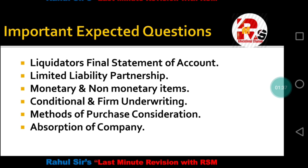The first expected short note is the Liquidator's Final Statement of Account, which comes from the liquidation chapter. The second is Limited Liability Partnership (LLP). Next is foreign exchange accounting for translation of foreign currency, where short notes can also be made. After that is conditional and firm underwriting, related to the chapter on underwriting of shares and debentures.